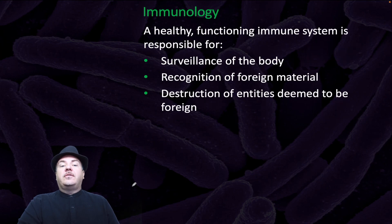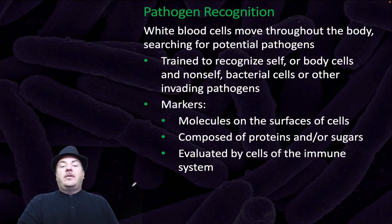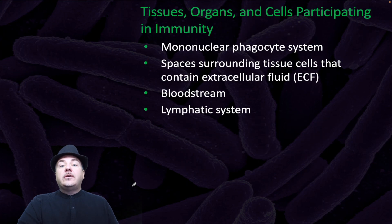A healthy functioning immune system is responsible for surveillance of the body, recognition of foreign material, and destruction of entities deemed to be foreign. White blood cells move throughout the body searching for potential pathogens. They're trained to recognize self, or body cells, and non-self, which can be bacteria cells or other invading pathogens. Markers are molecules on the surfaces of cells; they're composed of proteins and/or sugars, and they're evaluated by the cells of the immune system.